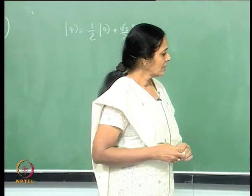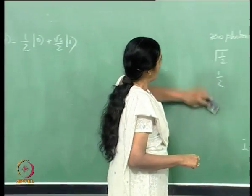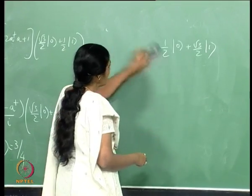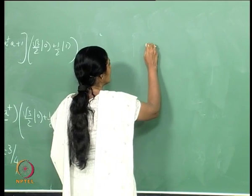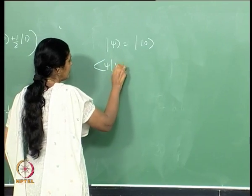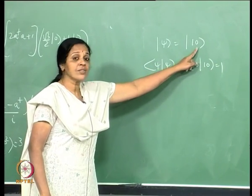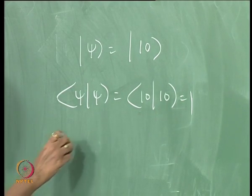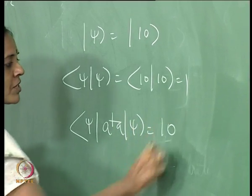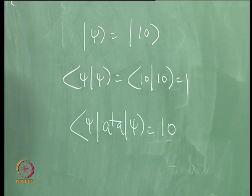Quantum optics abounds in non-classical states of light. To illustrate the power of quantum superposition further, I want to show another example — not in the context of squeezing but in a very different context. Consider the normalized 10-photon state ket 10. The mean photon number in this state is clearly 10, because a dagger a acting on ket 10 gives 10 times ket 10, and the inner product is 1. Now let me take the state psi and act on it with a dagger — in other words, add a photon to the state. A dagger on ket psi is root 11 times ket 11.